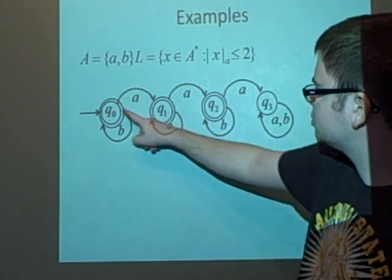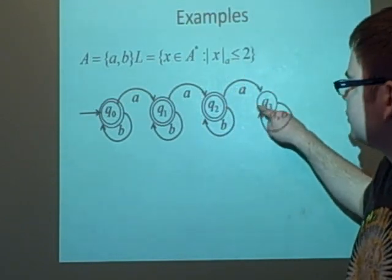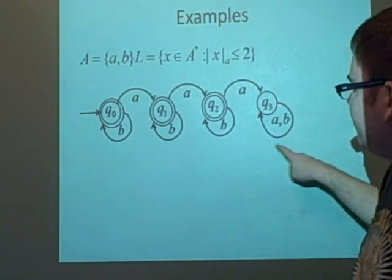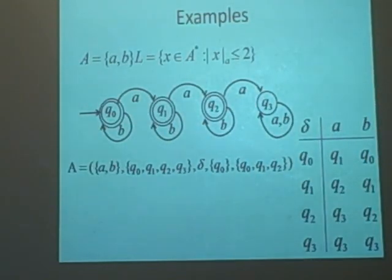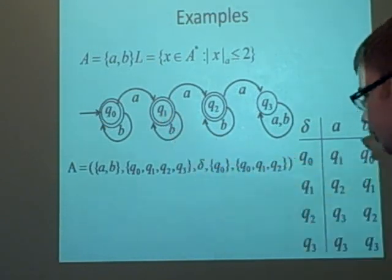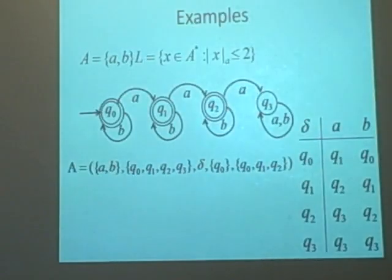From q₁, applying a gives us q₂, which is also a final state (two a's). But from q₂, if we apply a third a, we go to q₃, which is a sink state because we want less than or equal to 2 a's. Both a and b loop on q₃. We can write this as a transition table with δ, showing the states and alphabet. For example, δ(q₀,a) = q₁ and δ(q₁,b) = q₁. Because everything is defined, it's a complete DFA.